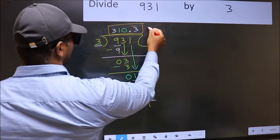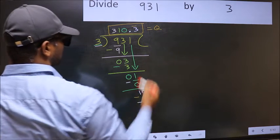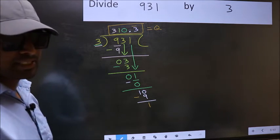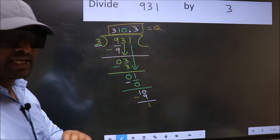So this is our quotient. Did you understand where the mistake happens? You should not make that mistake.